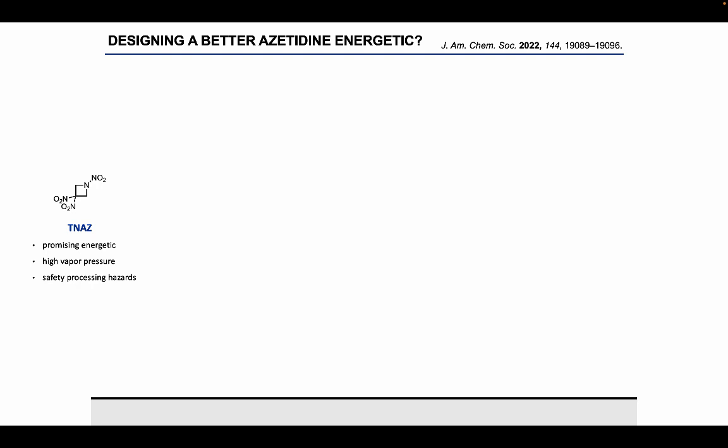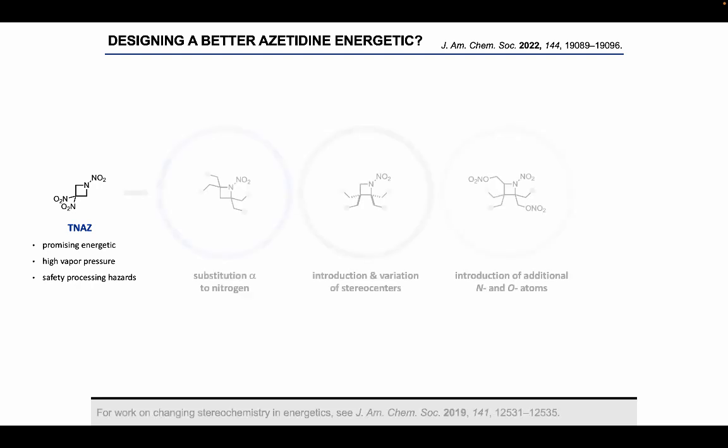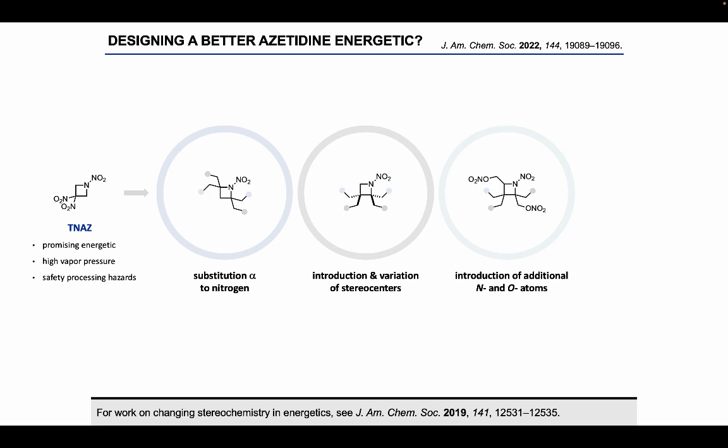This was considered a very promising energetic material in the early 80s. Unfortunately, its development ended up being halted due to its high vapor pressure in the molten state, which led to significant safety processing hazards. Seeing that this was really all that was known when it came to azetidine energetics, we felt like we could really improve upon this. Some of the different design principles we had in mind would be adding substitution alpha to the nitrogen, introducing stereocenters to the azetidine ring and varying the stereochemistry, and also introducing additional nitrogen and oxygen atoms. We felt like overall this could increase the energetic performance, but also tune the physical properties to make it safer to work with.